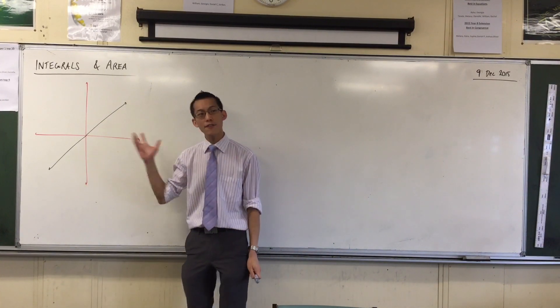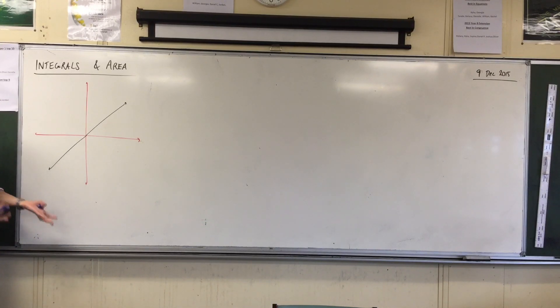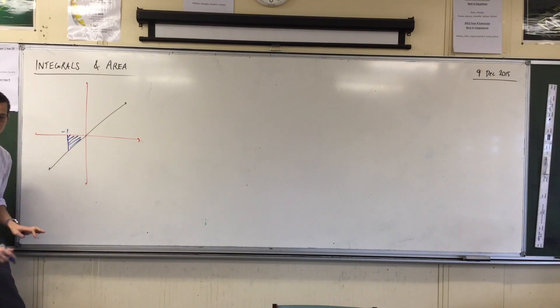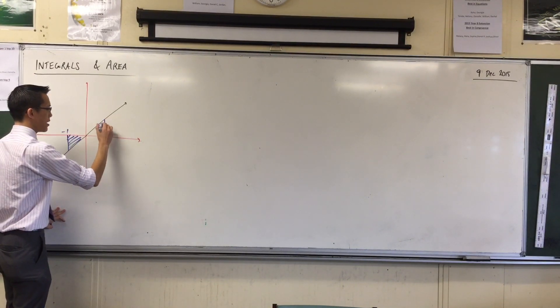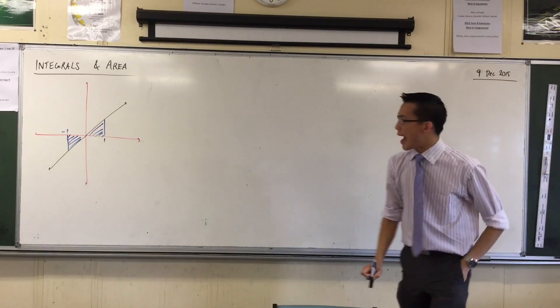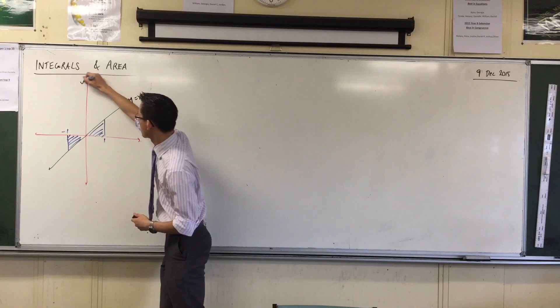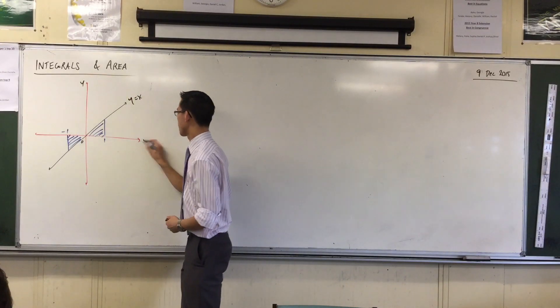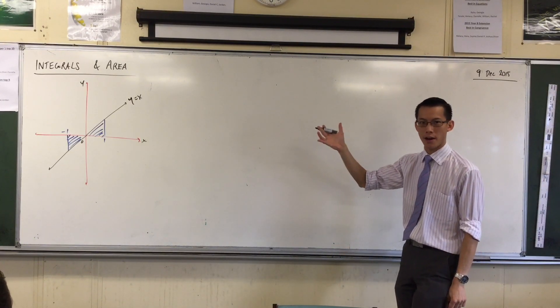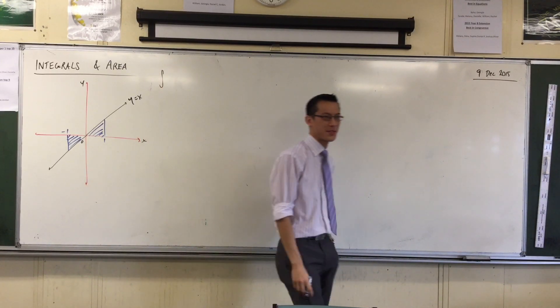Now if I wanted to determine, and let's just go with some simple numbers here. If I wanted to determine the area between here, this is negative 1, and here, which is positive 1. How would I write, if this was, say, something simple like y equals x? How would I write the integral that tells me, that defines this area?